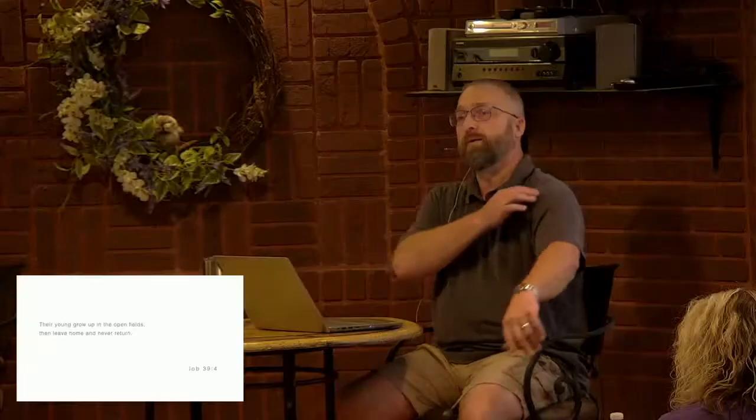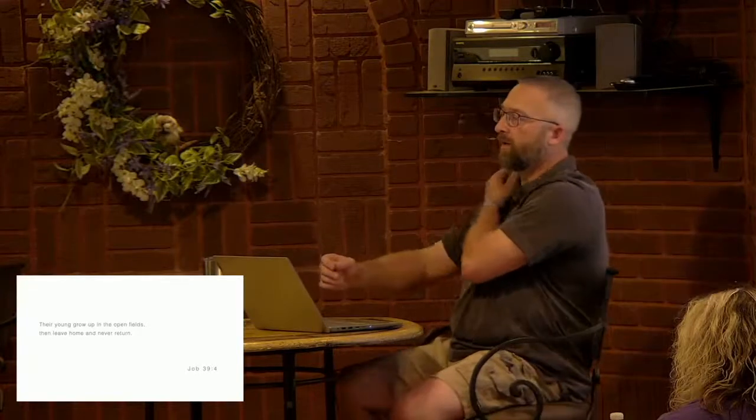So, what we're going to do here tonight, in chapter 39 here, we're going to go through these. There's these different animals that God presents to Job, and he throws them out here for Job to consider. So, I'm going to have a little fun with this, and we're just going to talk about these animals a little bit, and kind of get some of the facts about these things, and just kind of stand in awe of God's creation here in chapter 39.